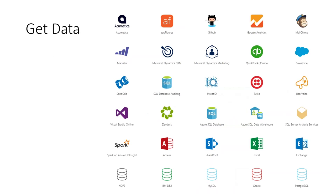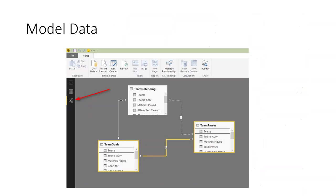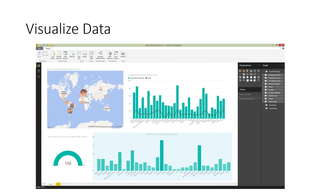Power BI Desktop connects to many data sources via its Power Query component. These include SaaS sources like MailChimp, Google Analytics, and GitHub, as well as databases like Oracle, MySQL, Azure SQL, on-premises SQL Server, and SSAS. You can then model the data, add measures, and create visualizations in the reporting side.